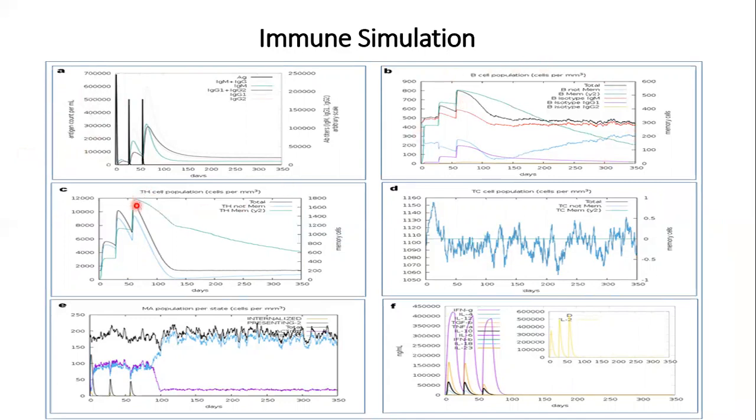And the helper T cell count, cytotoxic T cell population, the macrophage cell population and the cytokine levels. The cytokine level in plasma has also increased. So from this immune simulation study, we can also conclude that our vaccine V3 should have quite good immunostimulatory function or immunostimulatory capability.